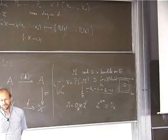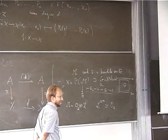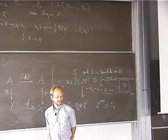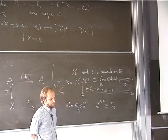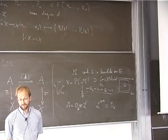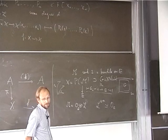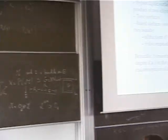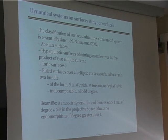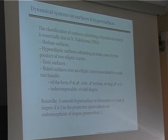The last example I want to state is in fact a non-example: if you take a smooth hypersurface of dimension greater than 1 and of degree at least 3 in some projective space, then it does not admit any endomorphism of degree greater than 1. This shows that such varieties won't admit an interesting dynamical system.